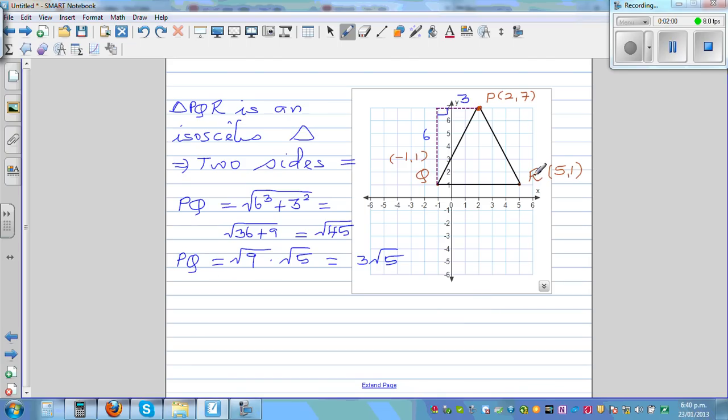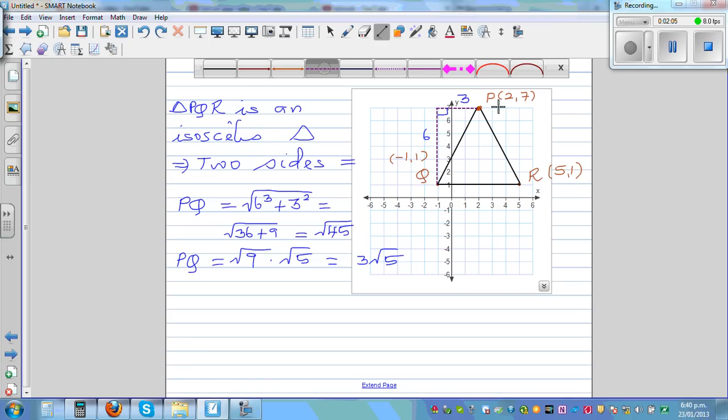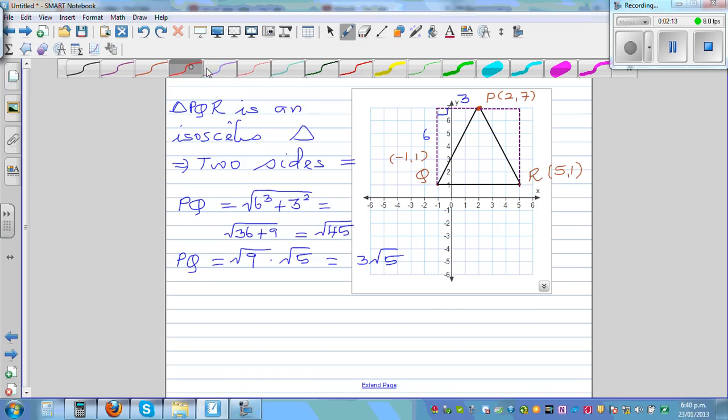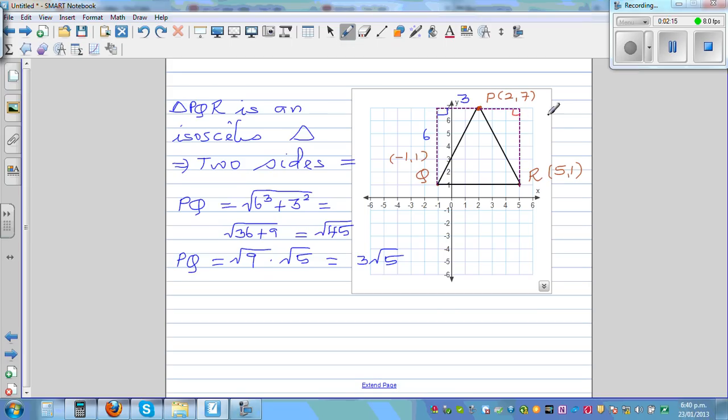So what is PR? Again, let's draw a right angle triangle joining these two points. So same, what can we do here? Same principle, same idea. So this distance from this point to this point is 3 and this distance is 6.